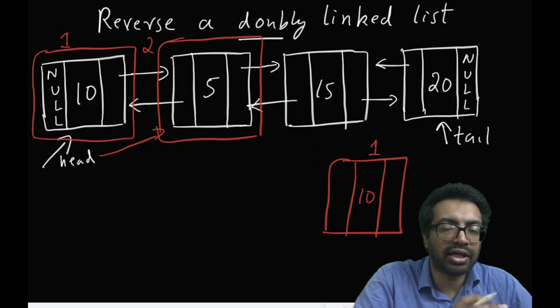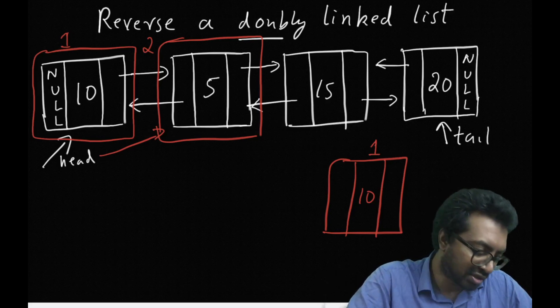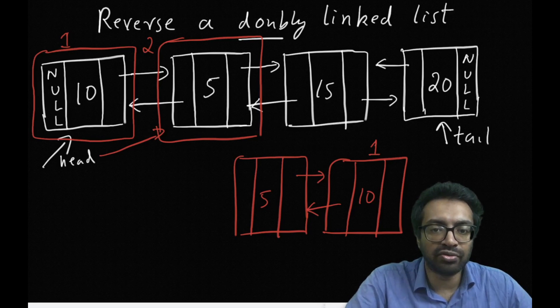And I am going to add this as front node to this new list which we are constructing. 10 and 5 got reversed into 5, 10. Let us continue this procedure.